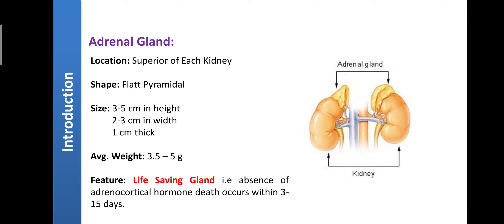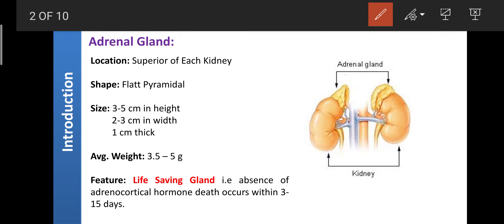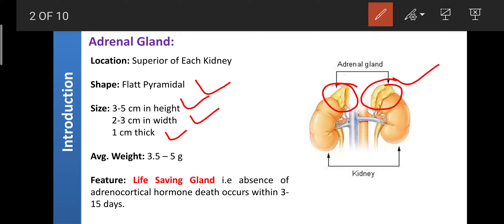Regarding the introduction to the adrenal glands: the adrenal gland is known as the cap of the kidney, or the suprarenal gland. Its exact location is superior to each kidney, on top of each kidney. Regarding shape, it looks like a flat pyramid. Its size is approximately 3 to 5 cm in height, 2 to 3 cm in width, and 1 cm thick.